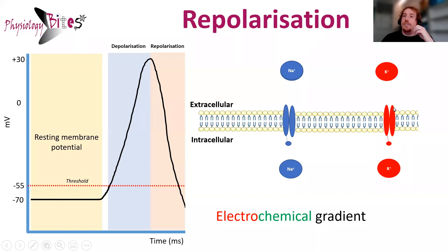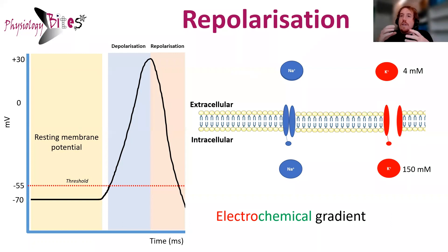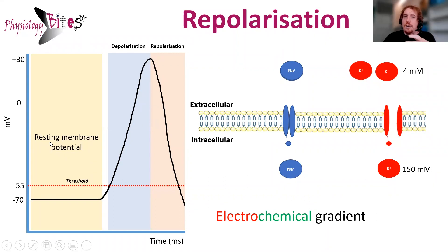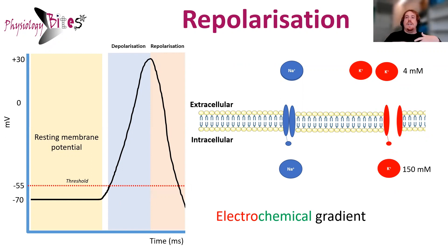Voltage-gated potassium channels will then open. When these voltage-gated potassium channels open, potassium is very high in the intracellular space and very low in the extracellular space. So potassium moves in the opposite direction to sodium, via its electrochemical gradient. There's a driving force pushing potassium from inside the cell to outside the cell. Because potassium has a positive charge, when we lose these positively charged ions from within the cell, the cell goes back to being more negative. So depolarization is caused by the influx of sodium ions, and repolarization is due to the efflux of positively charged potassium ions.